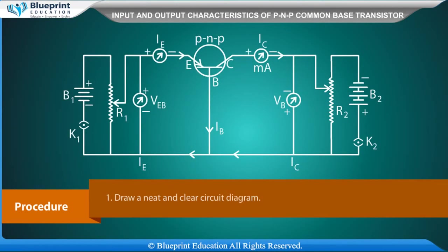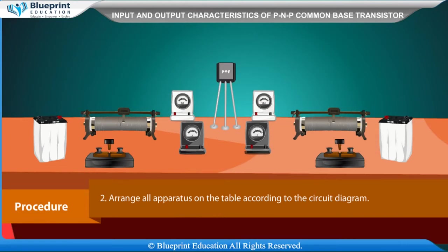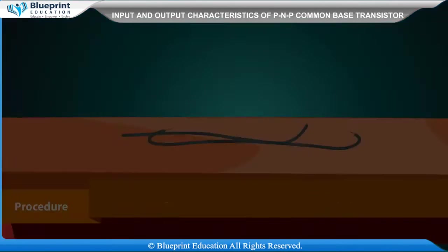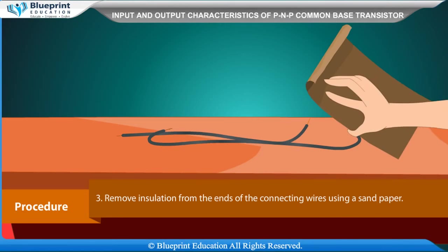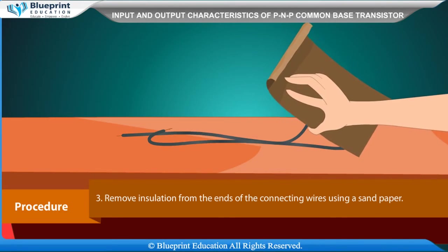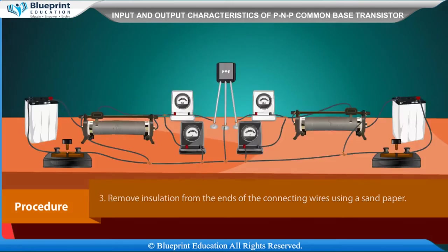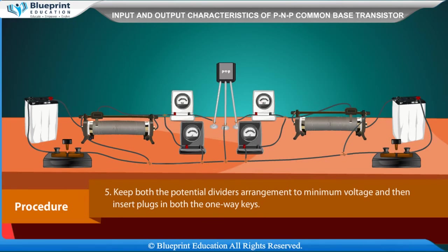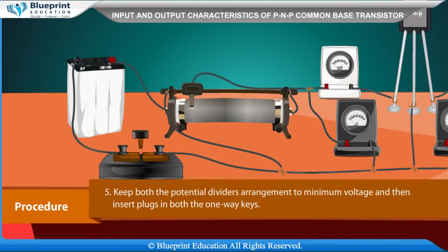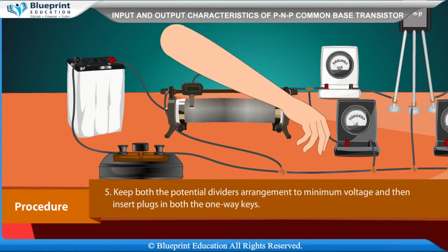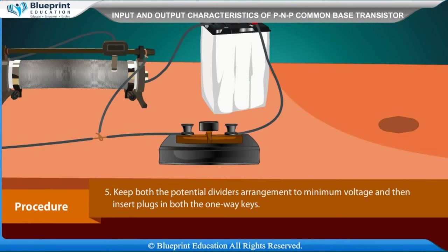Procedure: Draw a neat and clear circuit diagram. Arrange all apparatus on the table according to the circuit diagram. Remove insulation from the ends of the connecting wires using sandpaper. Make neat and tight connections according to the circuit diagram. Keep both potential dividers at minimum voltage, then insert plugs in both one-way keys.